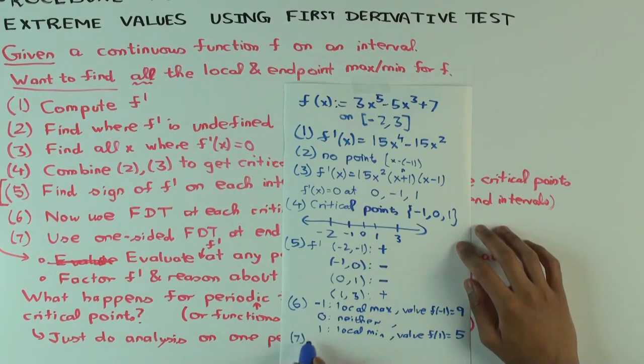Now the endpoint maximum. At minus 2, what do you have? Is it an endpoint minimum or endpoint maximum? Endpoint minimum, because it's increasing on the immediate right. The derivative is positive. And at 3, you have an endpoint what? At 3 you have a what? Endpoint max.